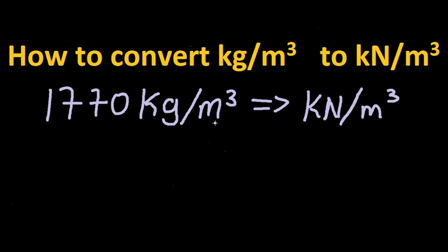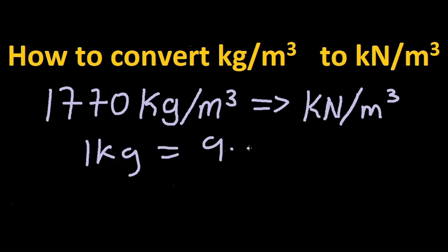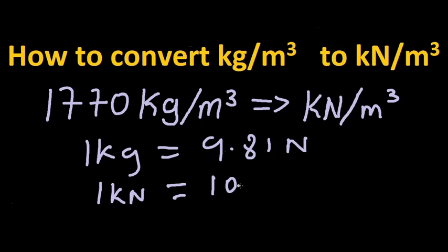In order to do this conversion easily and quickly, first you need to know that for each one kilogram of the body, we have 9.81 Newtons of force being exerted on it. Also, for each one kilonewton, we have a thousand Newtons.